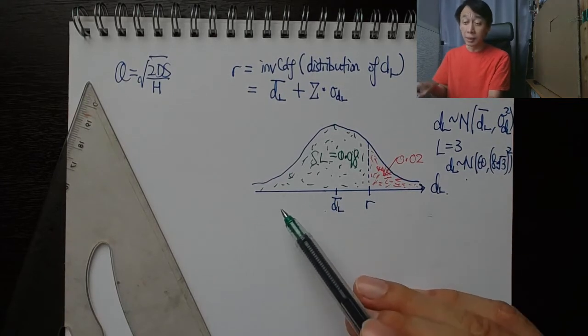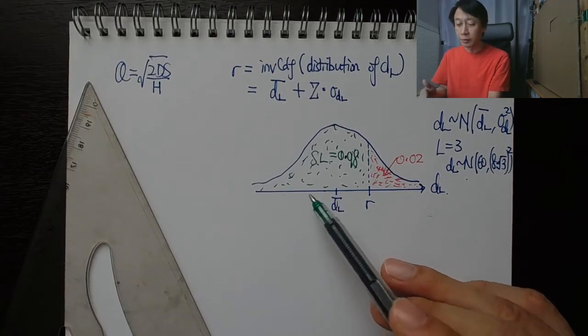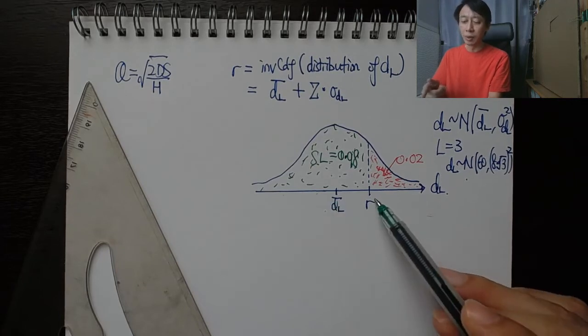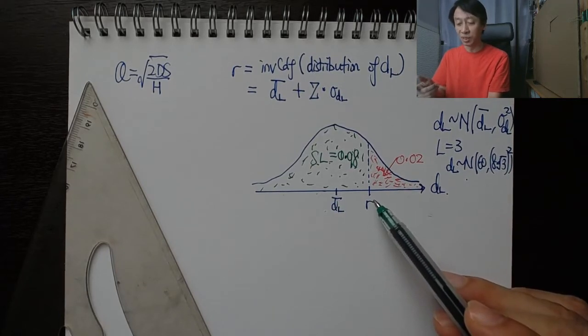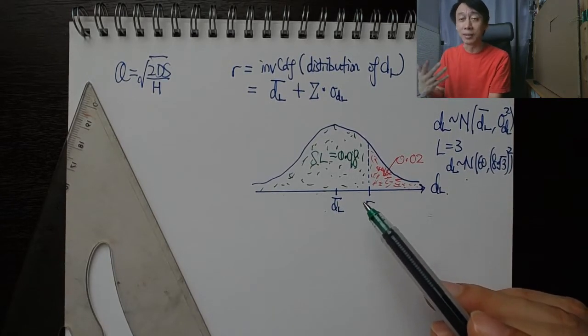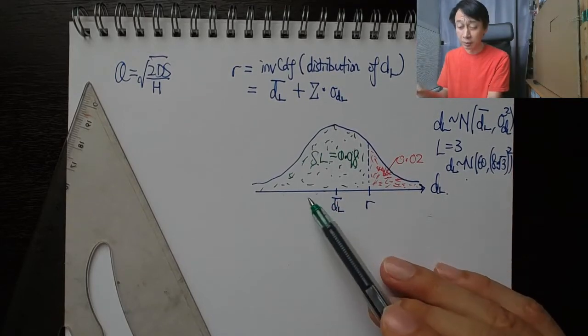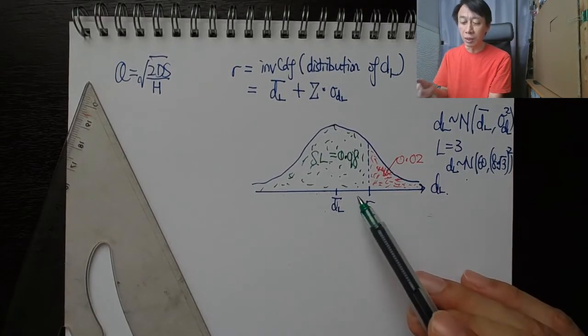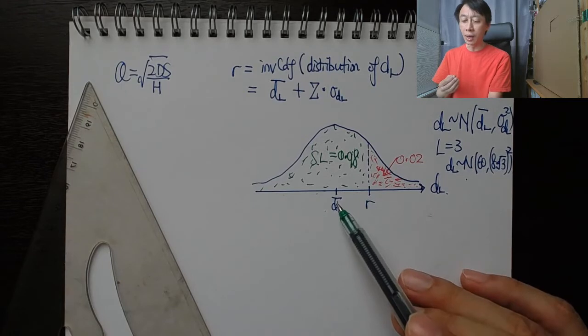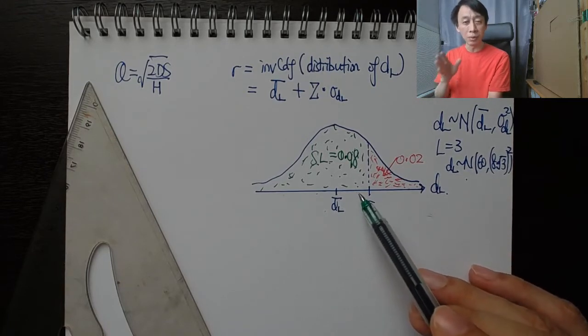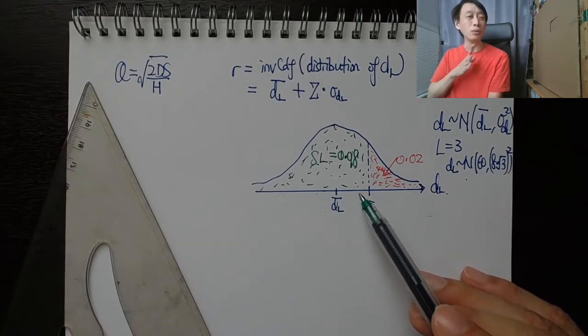In one particular inventory cycle, demand could be here, below, less than r, no problem, we still have inventory, so we have met demand during the lead time for that cycle. Another inventory cycle it was here, more than the average demand but still less than our reorder point, so we have met demand.